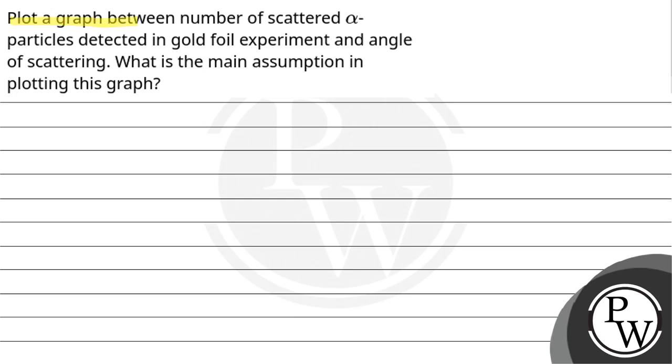Let's read the question. Plot a graph between number of scattered alpha particles detected in gold foil experiment and angle of scattering. What is the main assumption in plotting this graph? So here, our key concept is with the number of scattered particles.